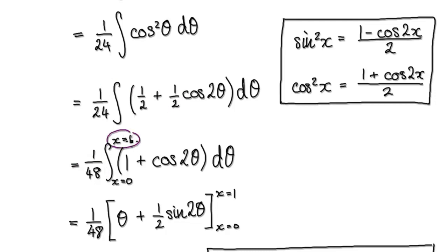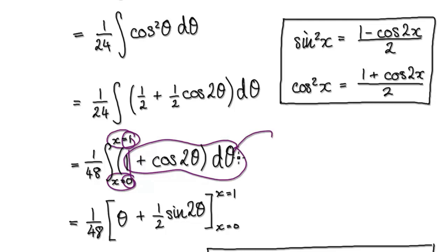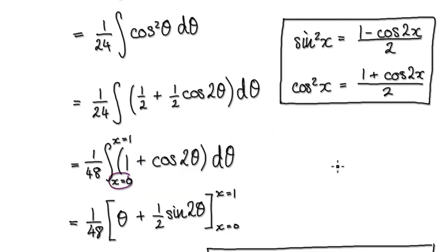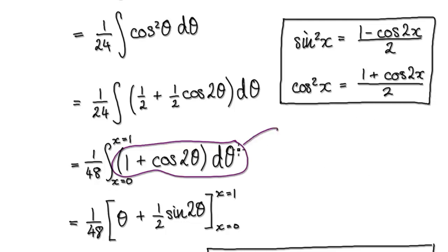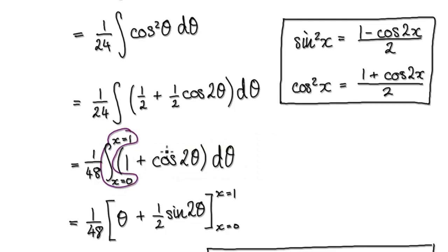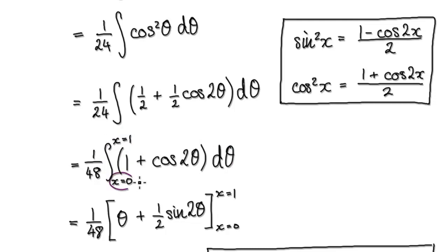Remember, we are integrating from x = 0 to x = 1. When we make the substitution, we are now in the dθ world. So we need to maintain this — later on we will substitute x back into θ. For the time being, just bear in mind that we are integrating with respect to θ, but we want to go from x = 0 to x = 1. These two are not compatible at the moment, but we will later change θ back into x. So keep this as x = 0 and x = 1.